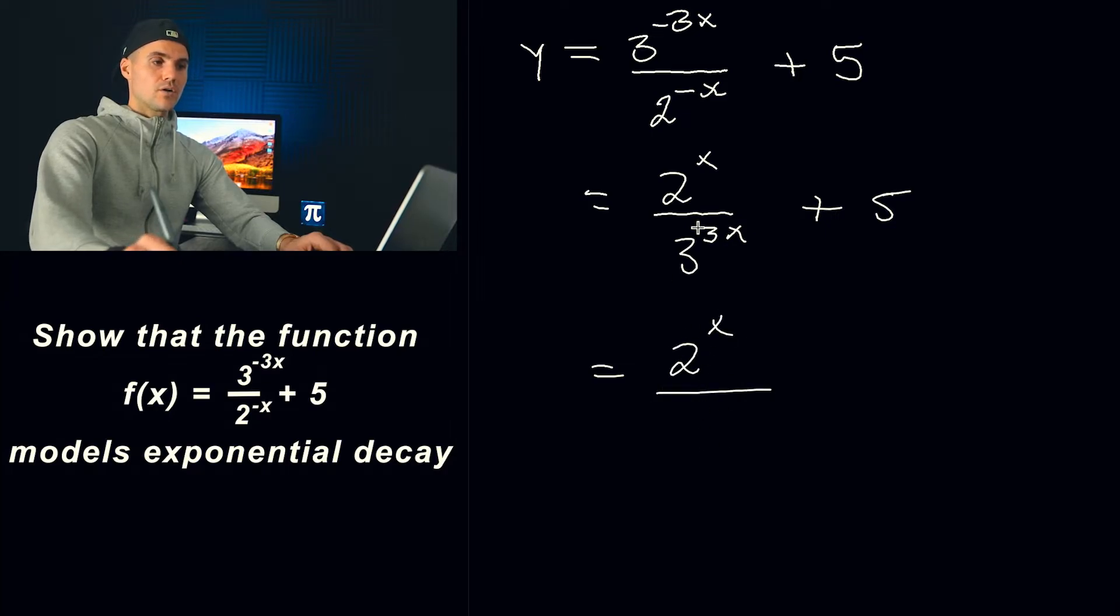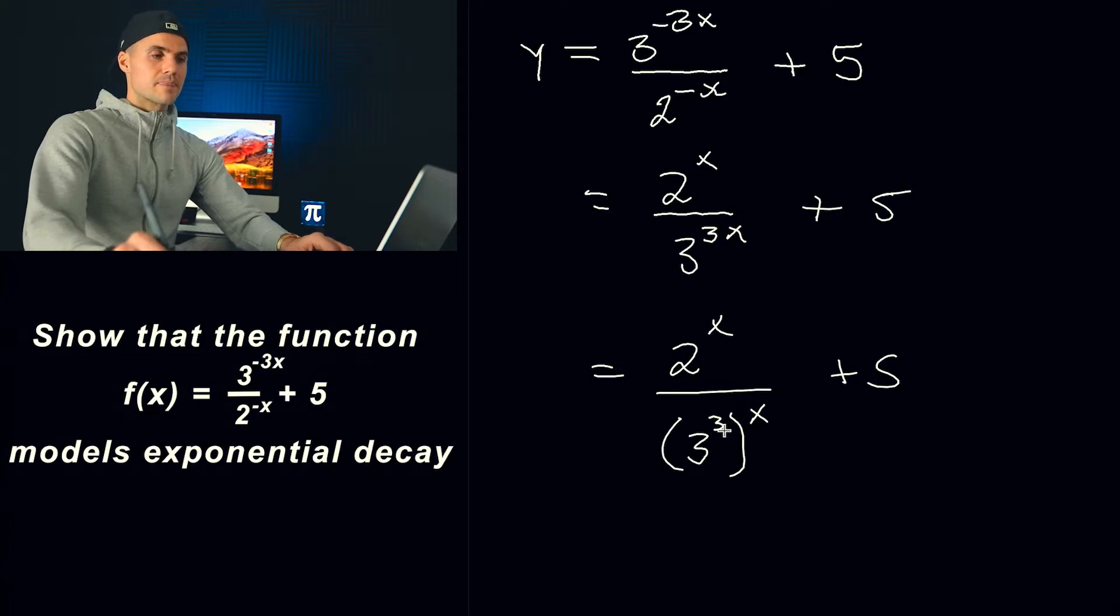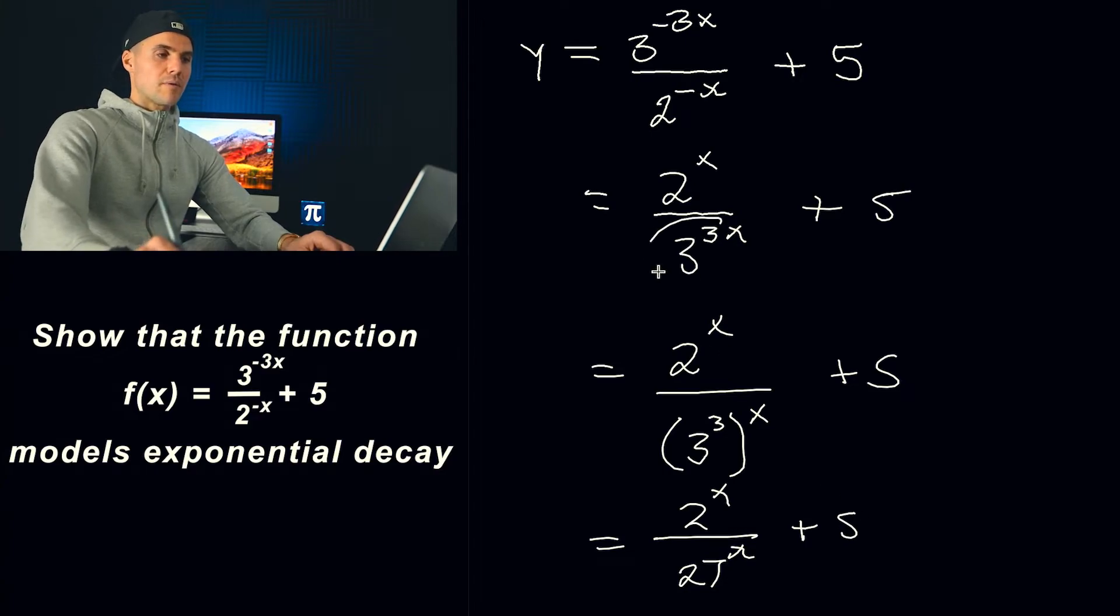then we'll have 2 to the power of x over now this 3 to the power of 3x I'm actually going to split this up like that and then what is 3 to the power of 3 that is, sorry I forgot the x here, that is 27 to the power of x okay so 3 to the power of 3x that's exactly the same as 27 to the power of x you can just split up the exponents and then get your new base like that